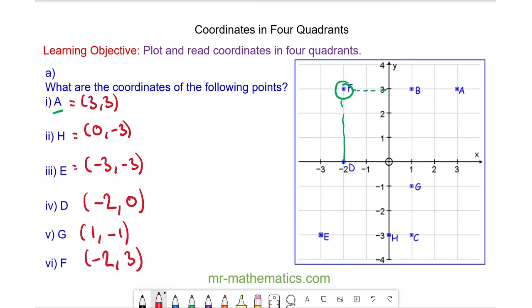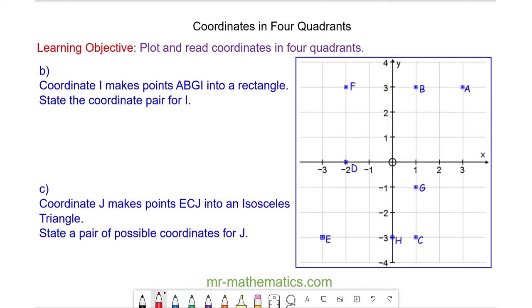Okay, let's try some more questions. Coordinate I makes the points A, B, G, I into a rectangle. We're going to find the coordinate pair of point I.